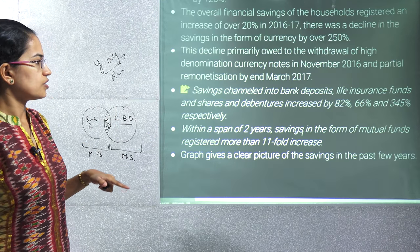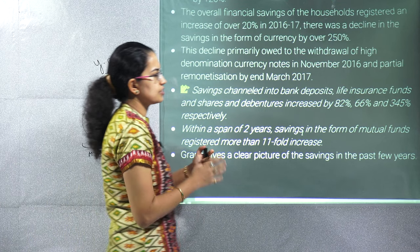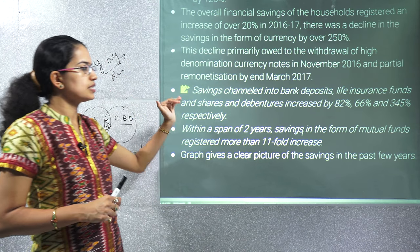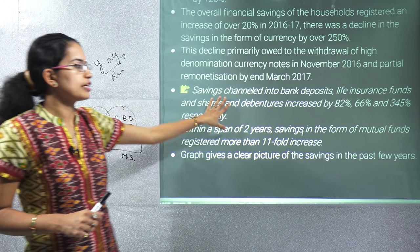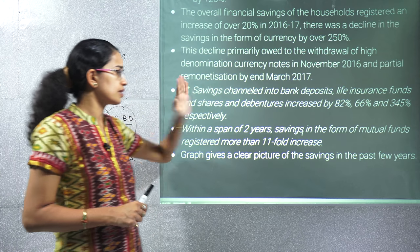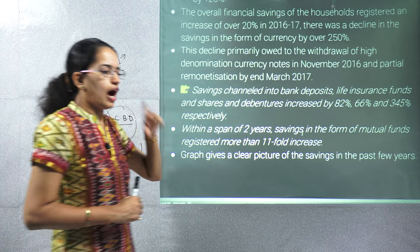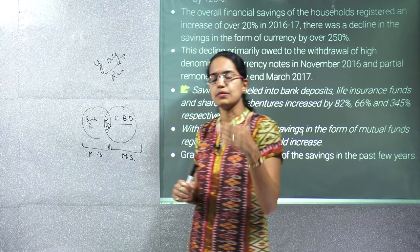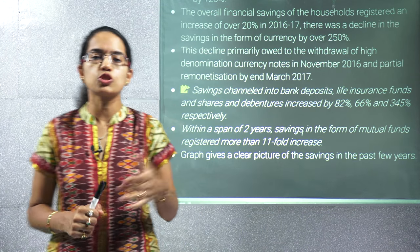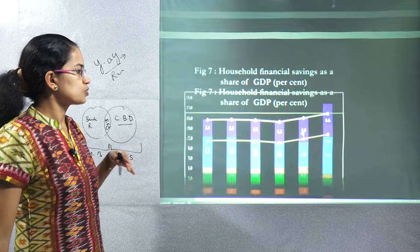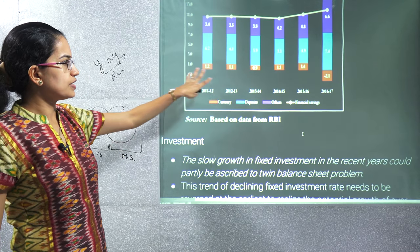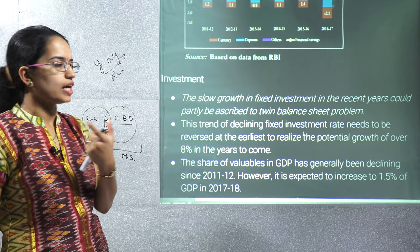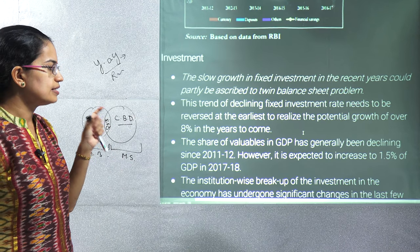Savings are channelized into bank deposits, life insurance funds, mutual insurance, shares and debentures, and their proportion has considerably increased over the years. After demonetization we had a phase of remonetization, and that remonetization phase was indeed slower compared to previous growth. Some of these charts could form good support for your answer writing.